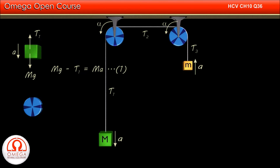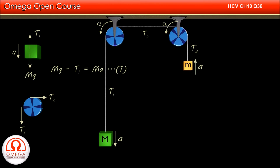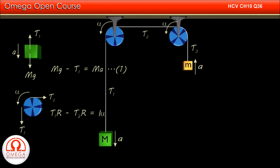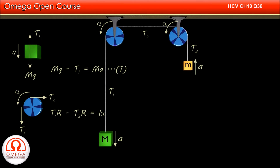In the free body diagram of the pulley on the left, tension T1 pulls the pulley downward while tension T2 pulls it towards the right. The pulley is accelerating in the anti-clockwise direction with angular acceleration alpha about its center. Since the radius of the pulley is r, the torque due to T1 about its center is T1 into r in the anti-clockwise direction and torque due to T2 is T2 into r in the clockwise direction. Hence, net torque is T1r minus T2r in the anti-clockwise direction, which must be equal to moment of inertia into alpha.